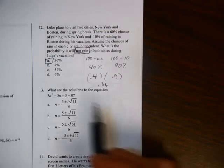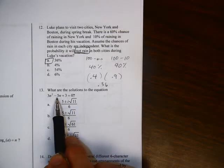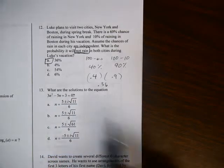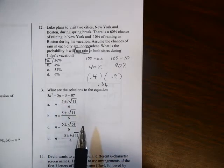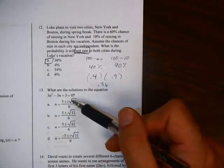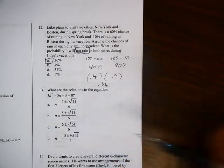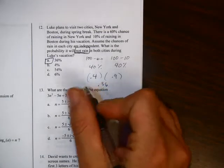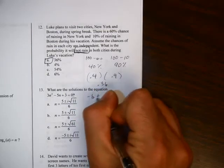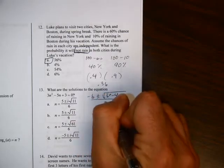For number 13, they ask us, what are the solutions to the equation 3n squared minus 5n plus 3 equals 0? If it's nice, we'd be able to factor this to get the two factors. But if you look at the four answers that we're given, since we have these square roots in all of them, chances are it's not going to factor, which means we're going to have to use quadratic formula. So if you remember quadratic formula, negative b plus or minus the square root of b squared minus 4ac all over 2a.